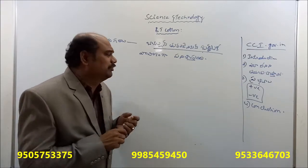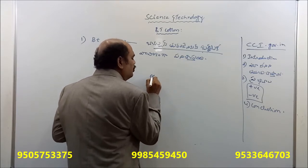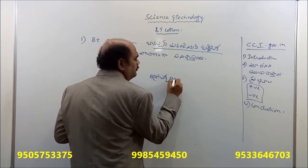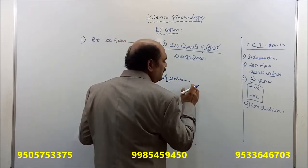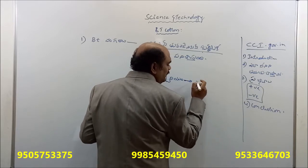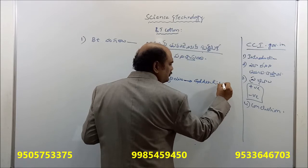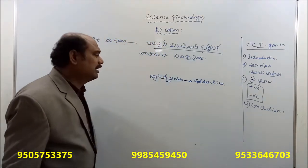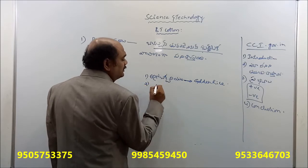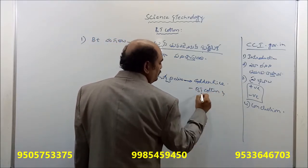Agrobacterium is used to produce golden rice. So, first, agrobacterium can be used to produce golden rice. Next, Bt cotton and Bt brinjal are also important GM crop examples derived using similar bacterial gene insertion techniques.